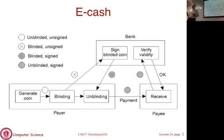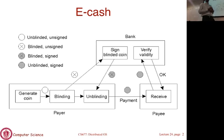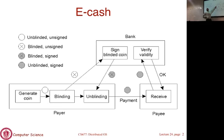Typically, if you want to generate e-cash, the payer generates a coin or token of a certain denomination — some number or amount — and the coin has a serial number associated with it. You then blind that coin, which means you put the coin in an envelope and seal it, so the serial number is no longer visible. You present it to a bank and say 'sign it,' so that when you present it to someone they can verify it's legitimate — backed by a bank.